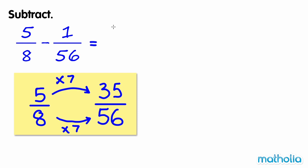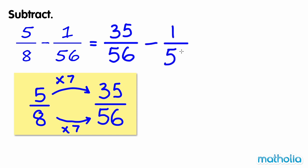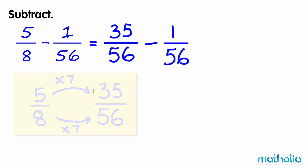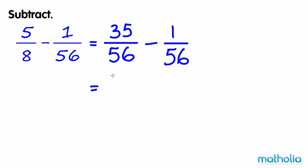So 5 eighths minus 1 fifty-sixth equals 35 fifty-sixths minus 1 fifty-sixth, which equals 34 fifty-sixths.